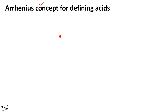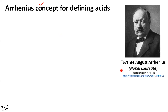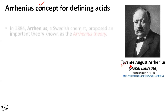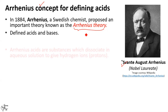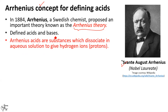Let us take up the Arrhenius theory for defining acids. The Nobel laureate Svante August Arrhenius was a physicist as well as a renowned chemist. In the year 1884 he proposed the Arrhenius theory, which defined acids and bases. According to this theory, acids are substances that dissociate in water — the word 'water' or 'aqueous' is very important in this definition — and they dissociate in water to give hydrogen ions, also known as protons, represented as H⁺.